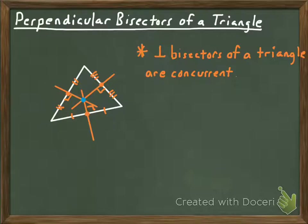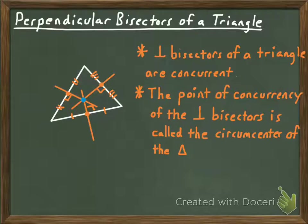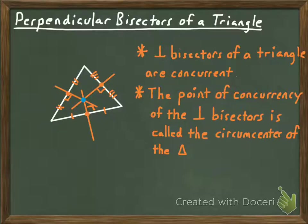Another thing I want you to know is that the point of concurrency for the perpendicular bisectors of a triangle has a special name — it's called the circumcenter of the triangle. The point of concurrency of the perpendicular bisectors is called the circumcenter of the triangle. There's a special property about the circumcenter which I want to describe right now, by comparing it to what we've already learned about points that are on perpendicular bisectors of a segment.